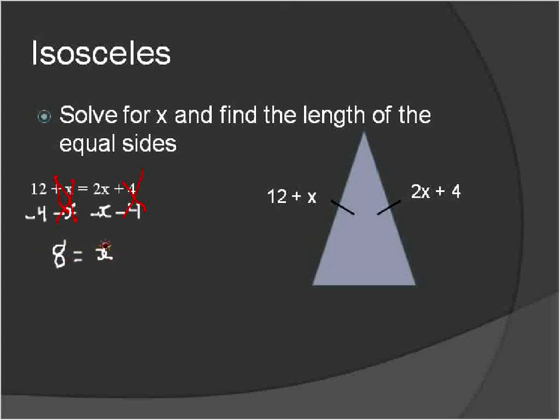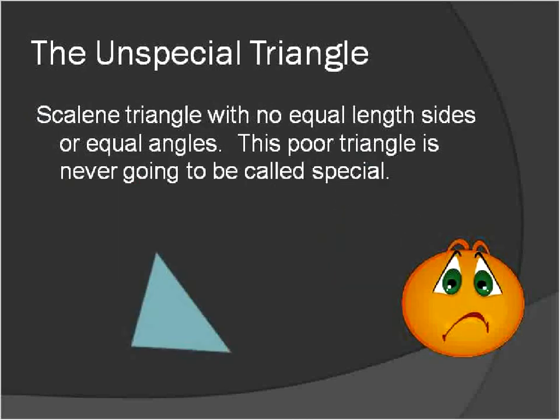I can use that information. 8 equals x. Substitute that into our equation here. 12 plus 8 gives me the value of 20 for this side of the triangle. And 2 times x is 2 times 8 is 16 plus 4 gives me 20 for that side. So I've now solved that both sides of this triangle are 20 units long, and 8 is equal to x. So those are the types of things you may be asked, types of questions you may see using these special triangles.